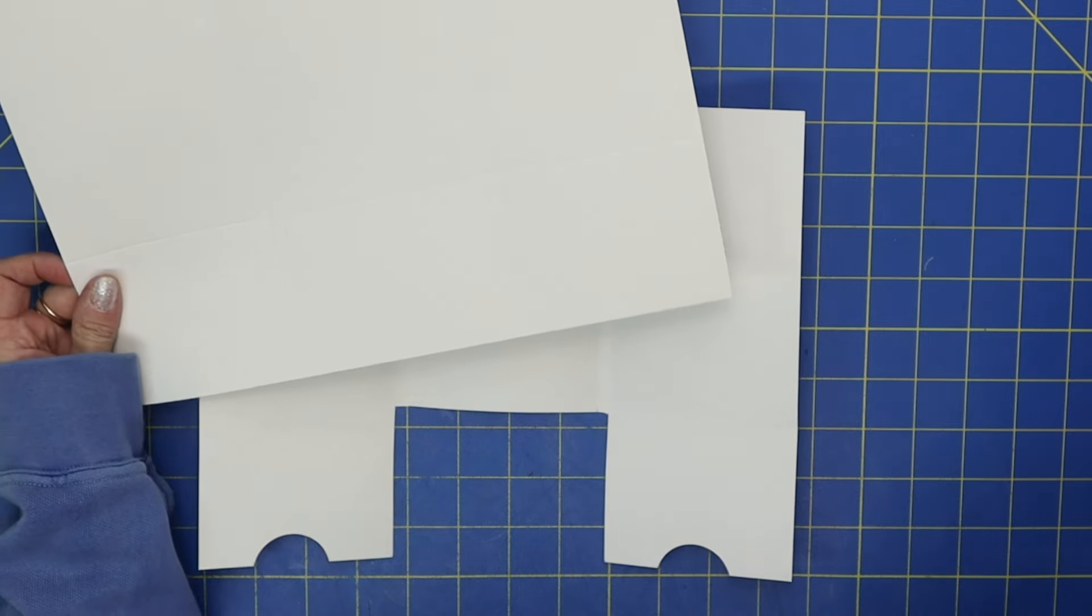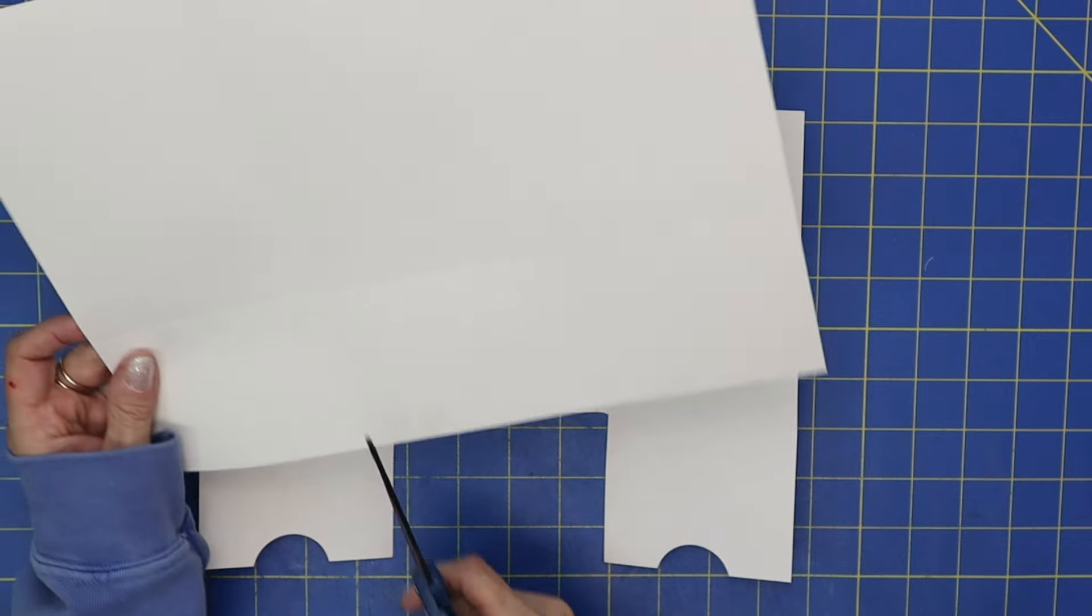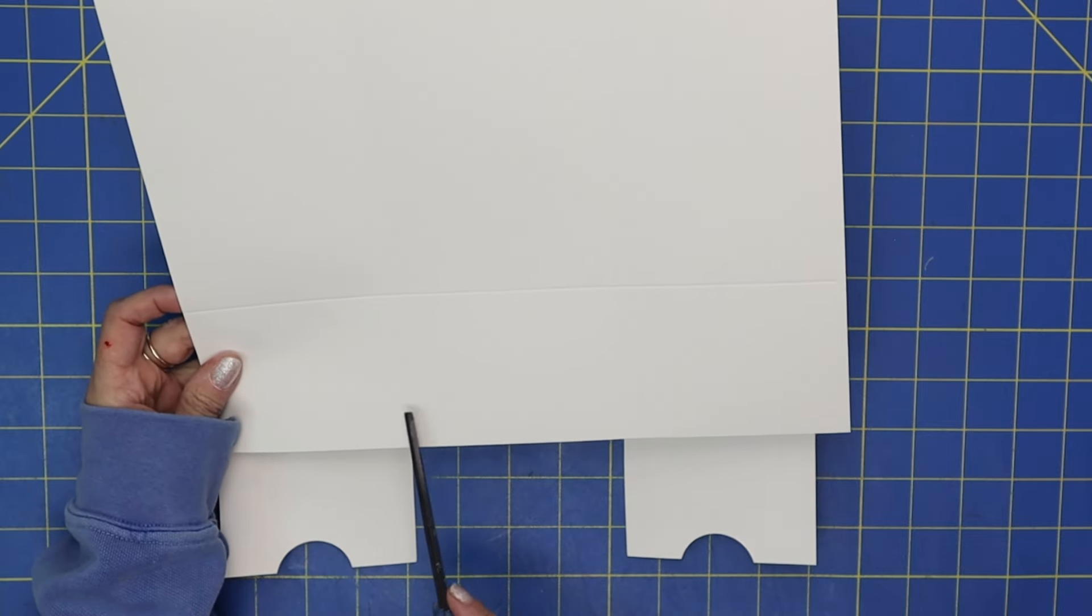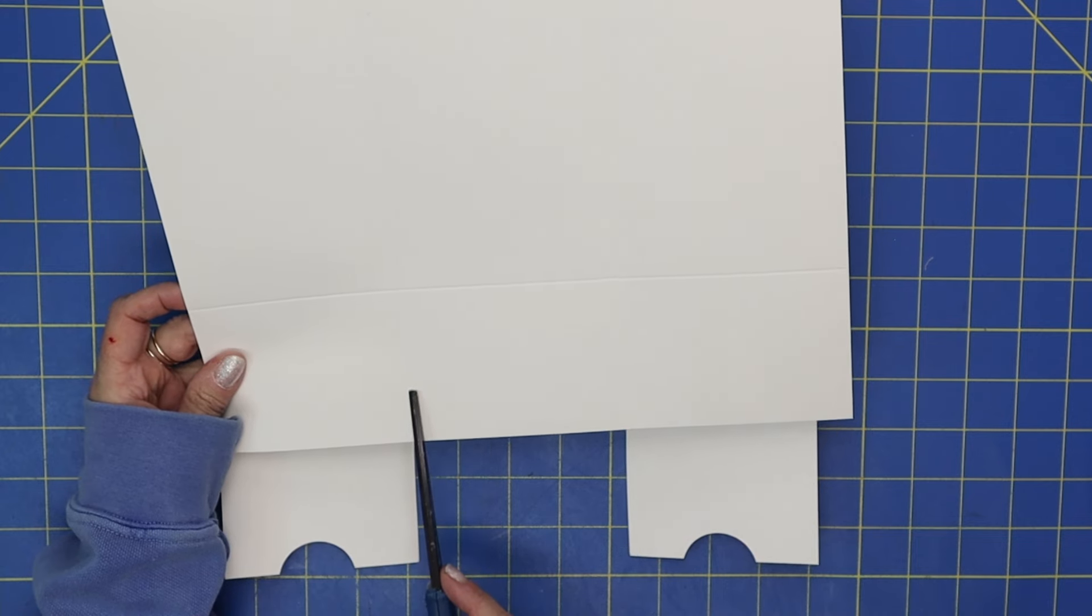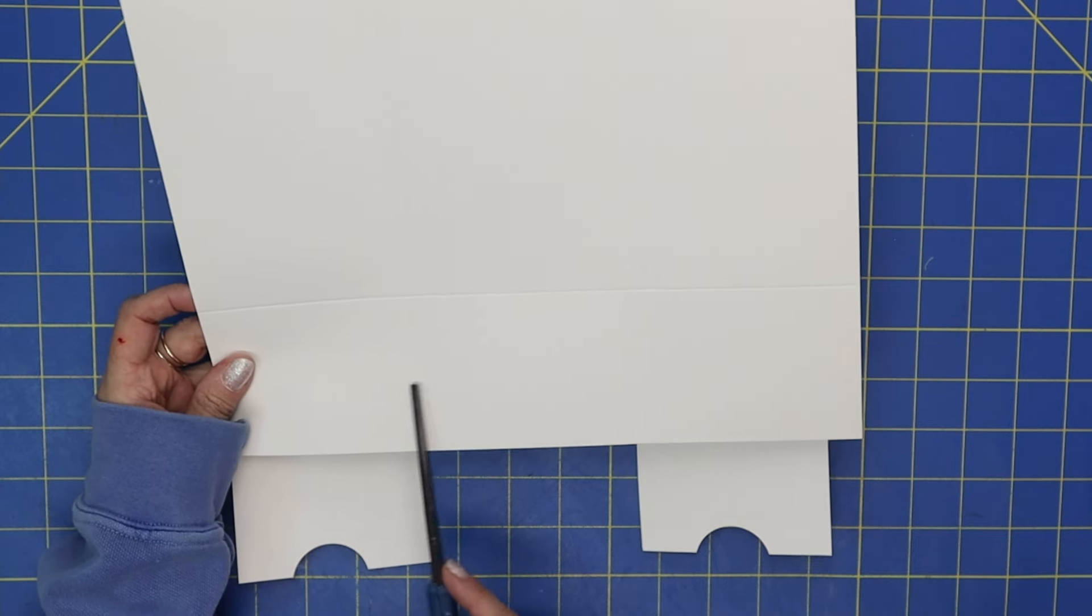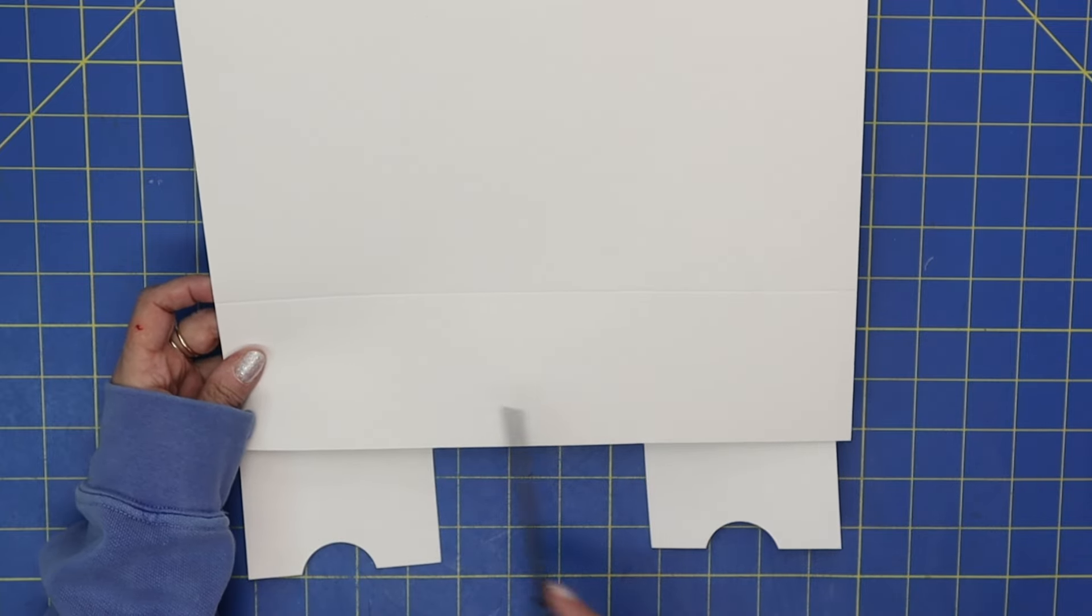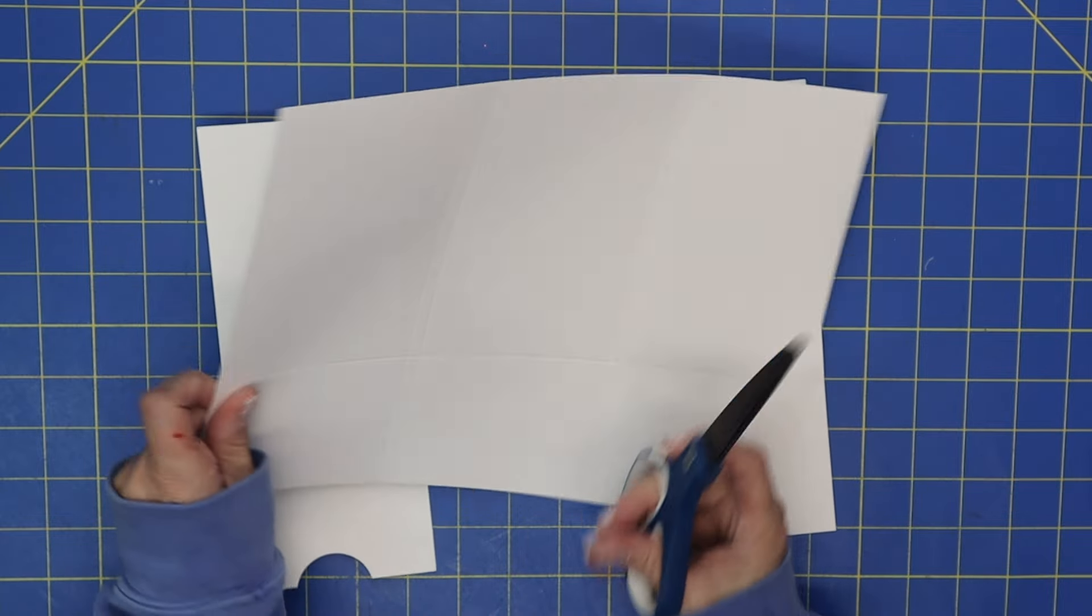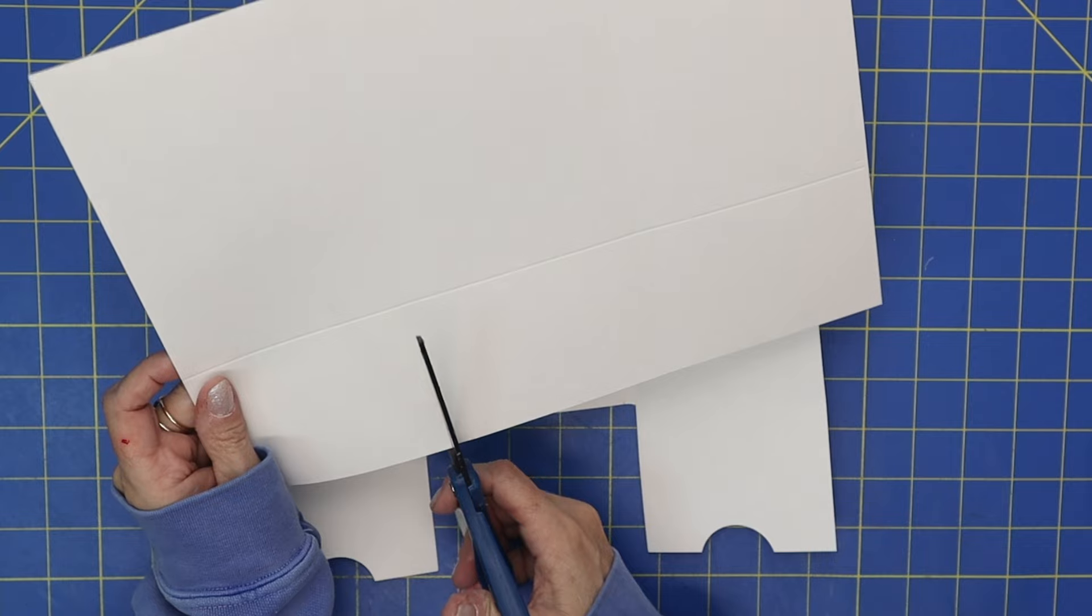So grab your scissors. What you want to do is you want to cut on the outer score lines—there's a score line here and a score line here. I'm going to call this the outer because it's towards the outside. Then you've got the other score lines towards the inside. So we're going to call this the outer score lines that you want to cut.